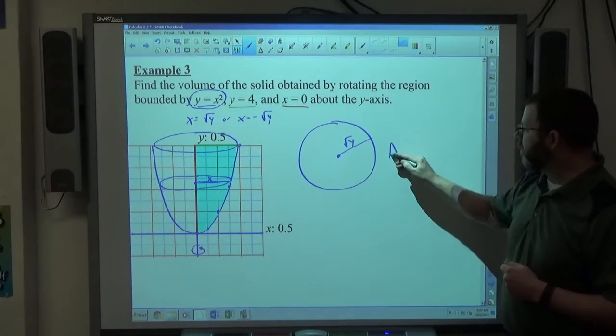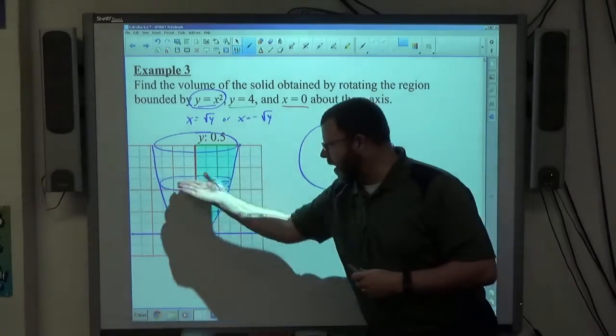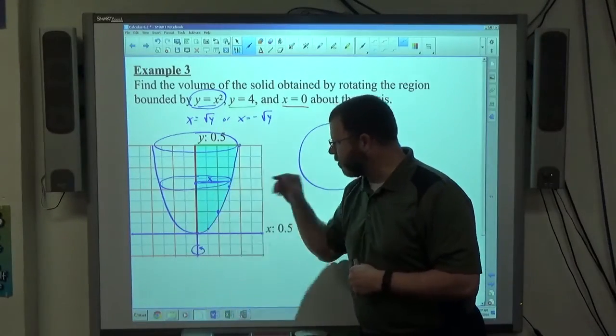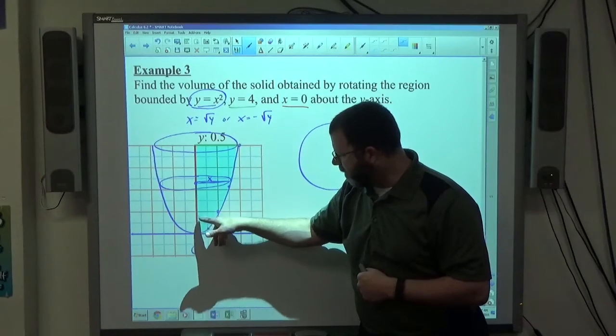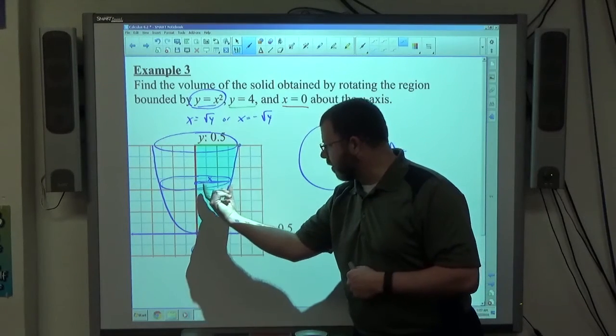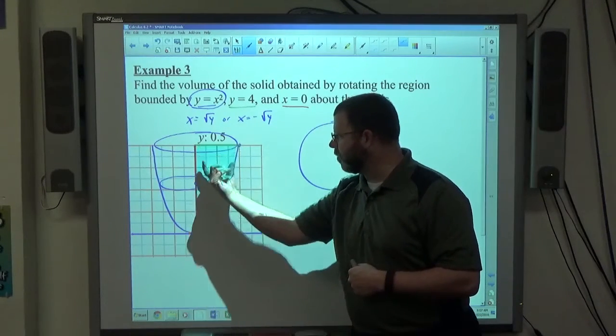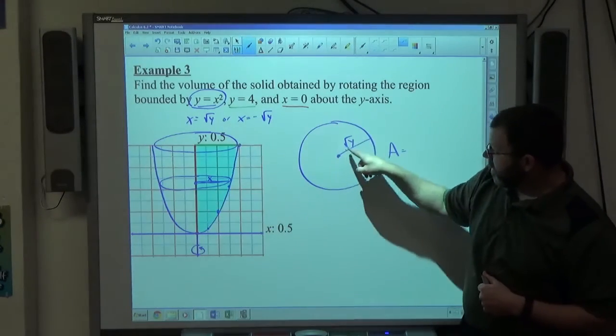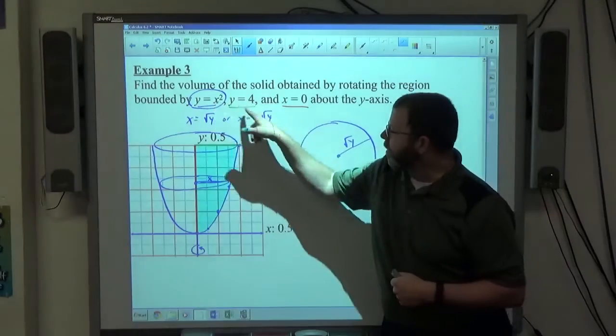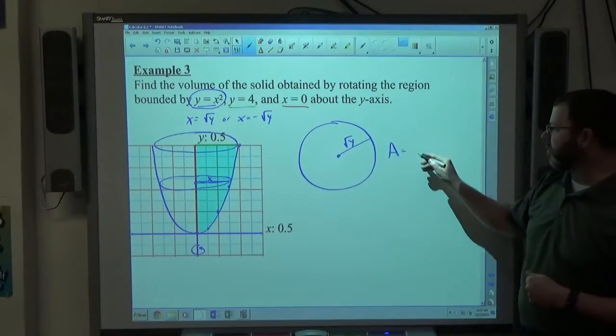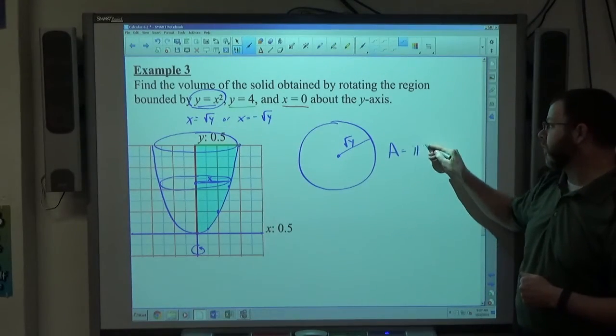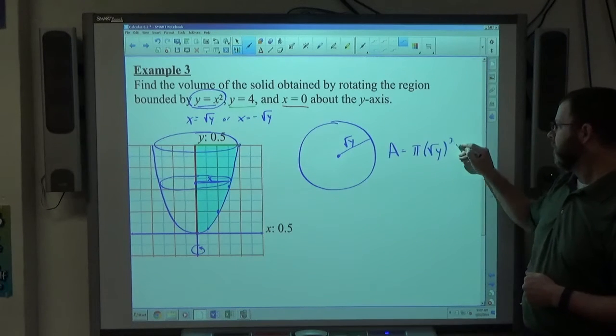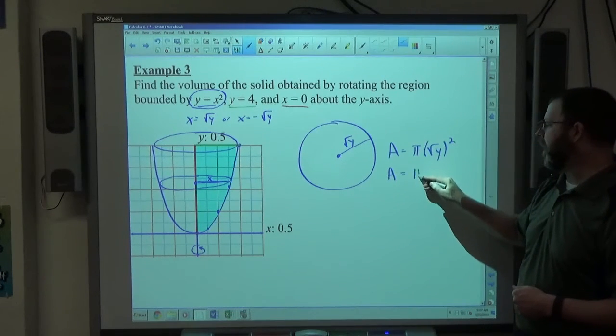So the area of our cross section, this chopped out circle here with the radius of x, which changes. If I'm here it's 1, if I'm here it's 1.5, if I'm here it's 2, so it's changing. But whatever it is is what it is. x always equals the square root of y according to our equation. So the area of this thing is always going to be pi times the square root of y squared. So the area of the cross section is just going to be pi y.